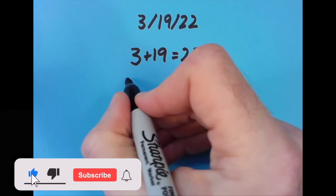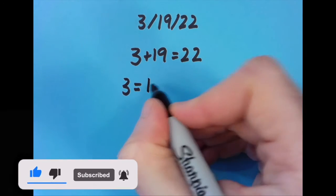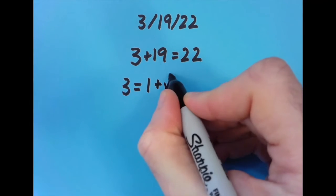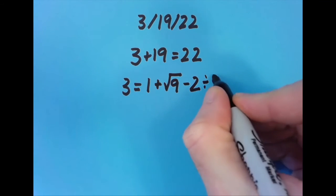But there's other ways to do it. And so I said, well, let's move the equal sign someplace else. So if I put the equal sign first, I can say that 3 equals 1 plus the square root of 9 minus 2 divided by 2.